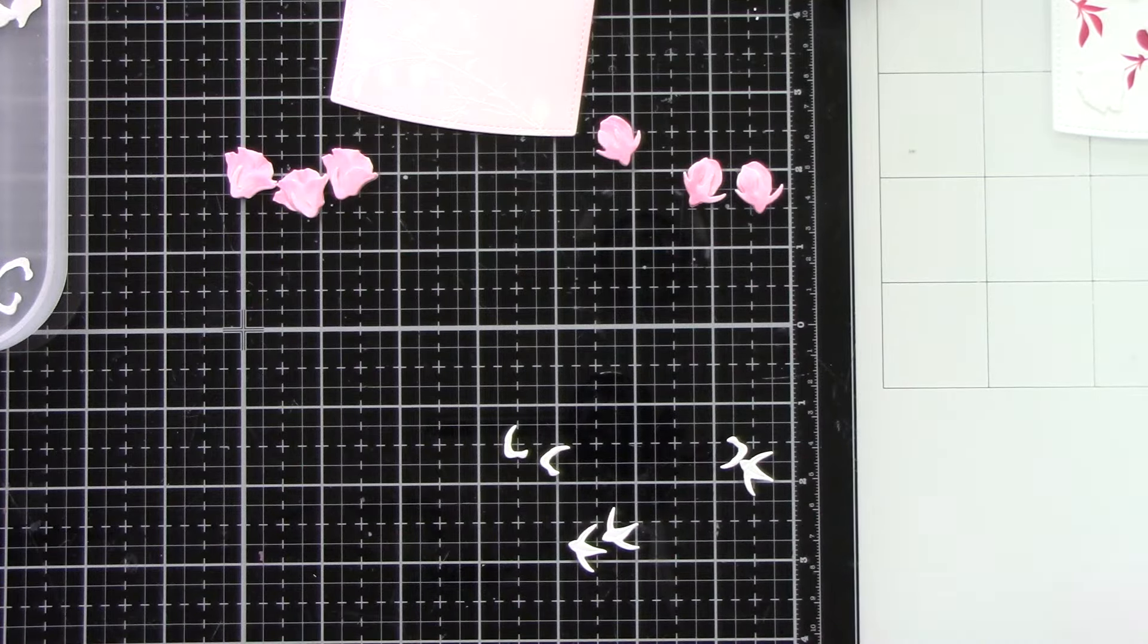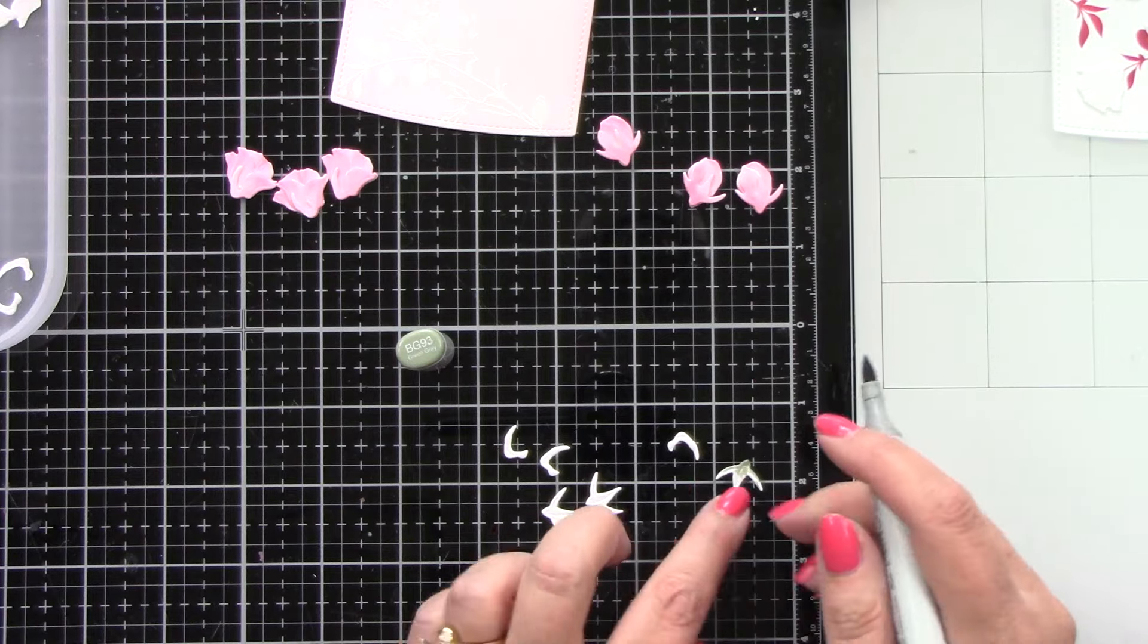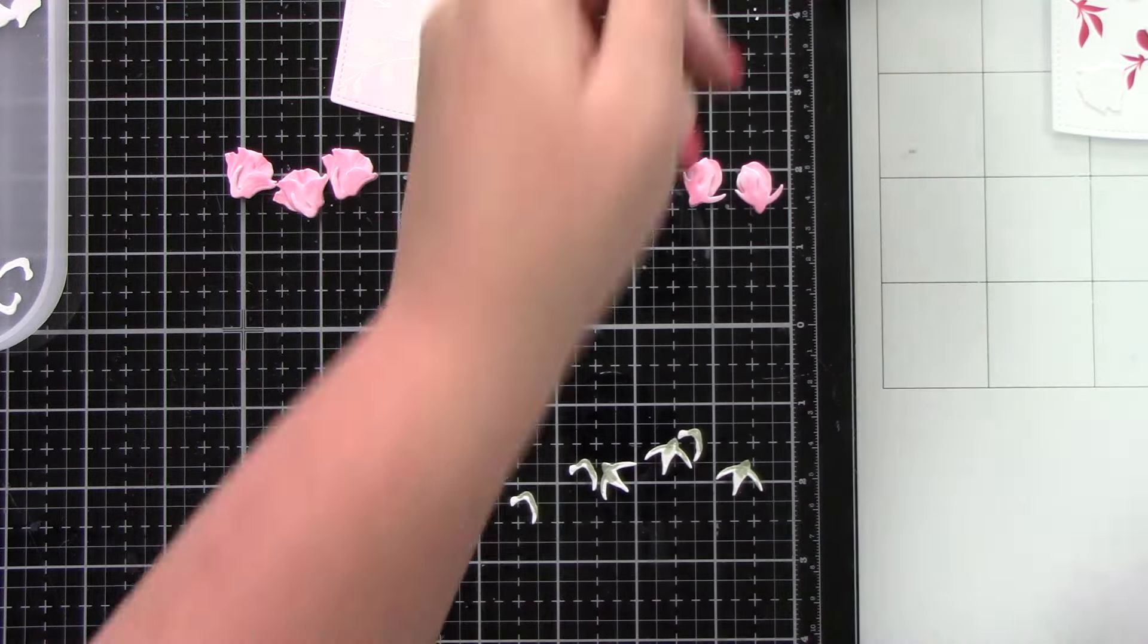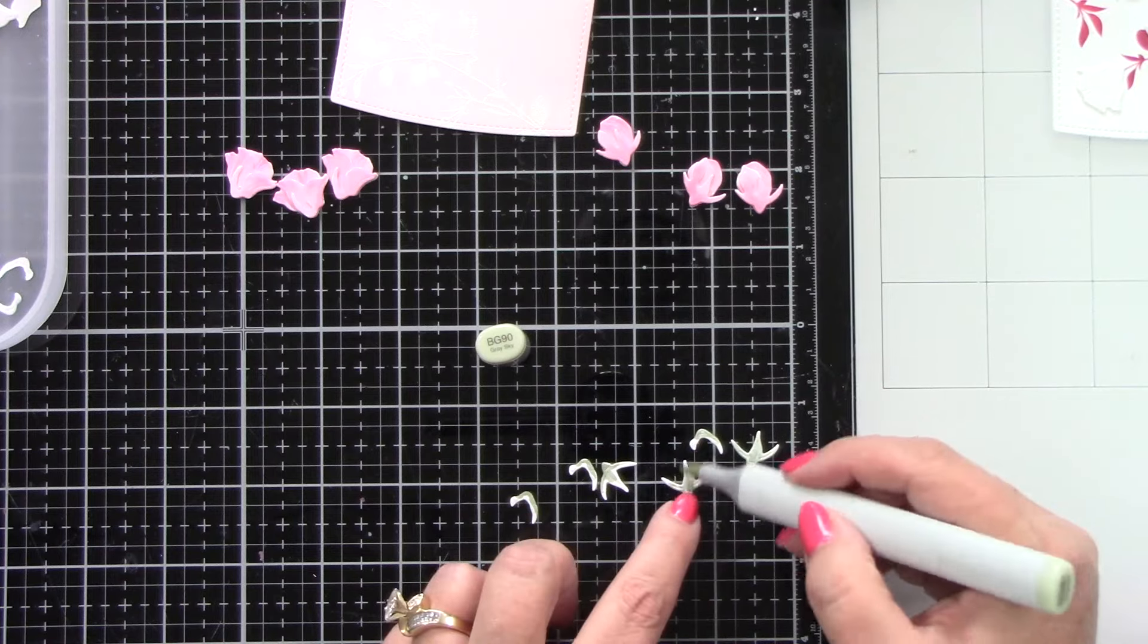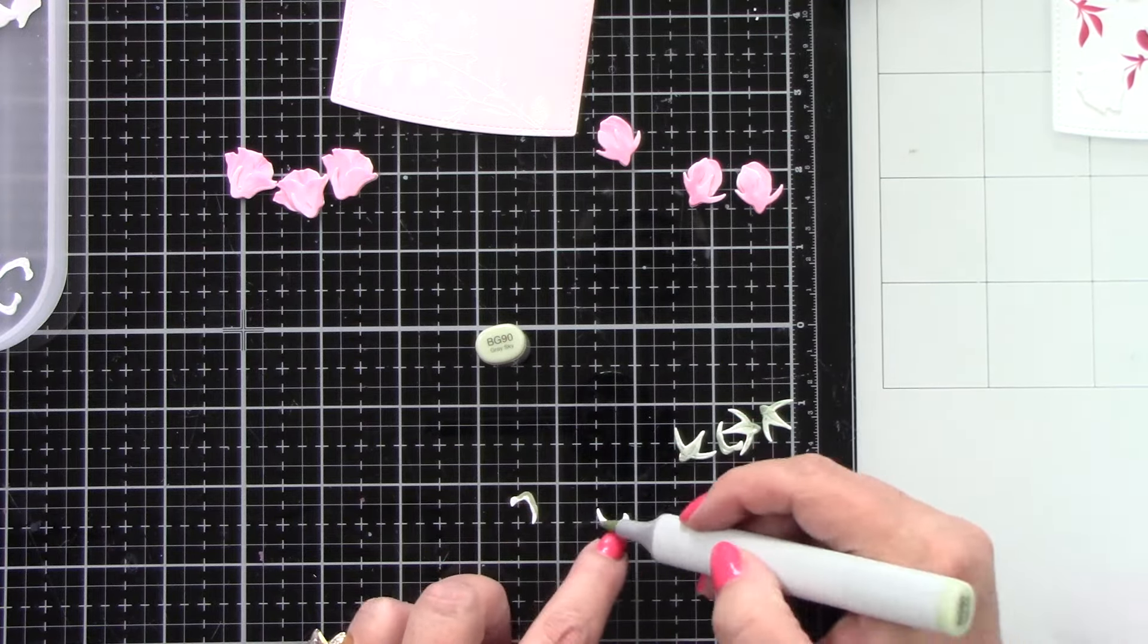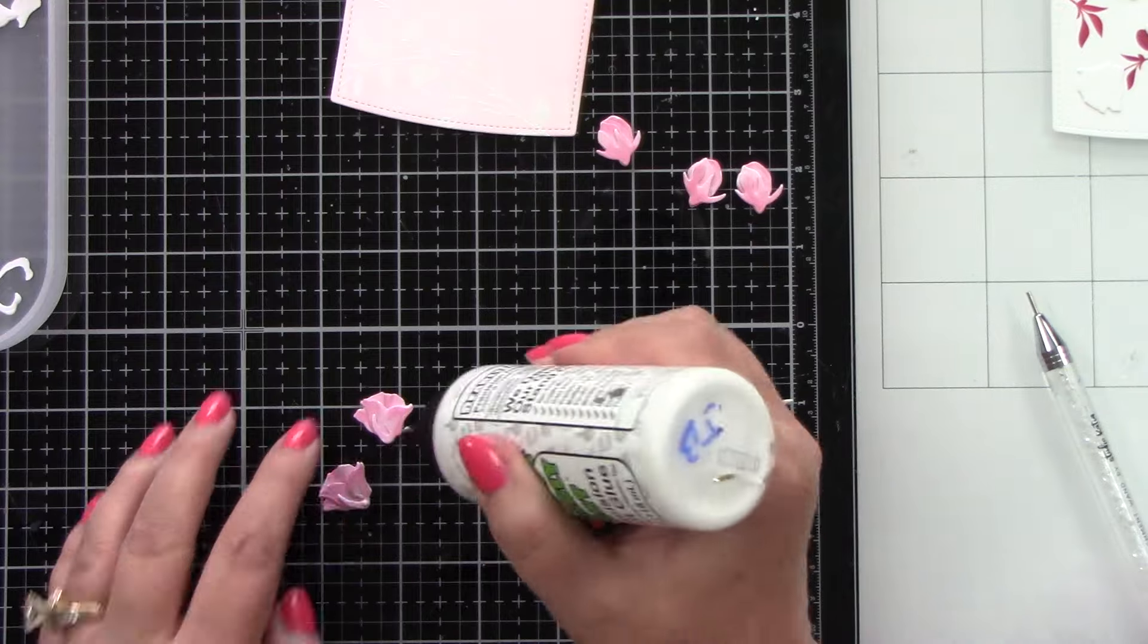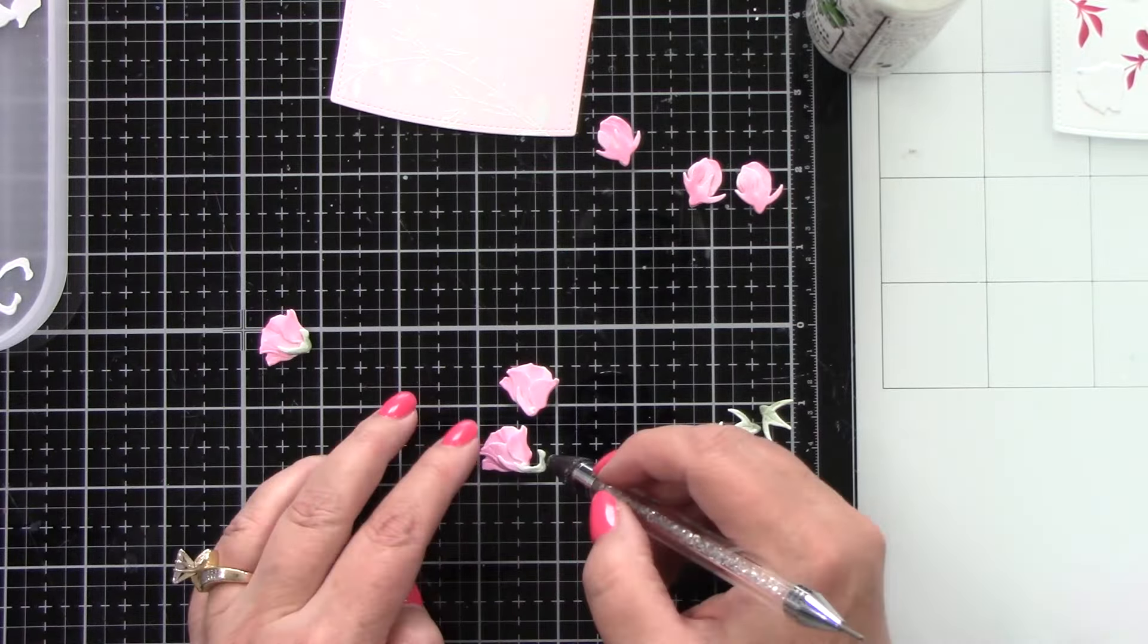So I am going to start with the 93. That is the darker color, adding just a little bit at the bottom and then blending it out with the BG90. This goes really quickly, which is good because there are a lot of these little roses. So let's finish getting those colored. And when I go over it with that lighter color, it blends in and kind of softens that darker color that we laid down. Again, adding just dots of glue and then popping these guys right in place.